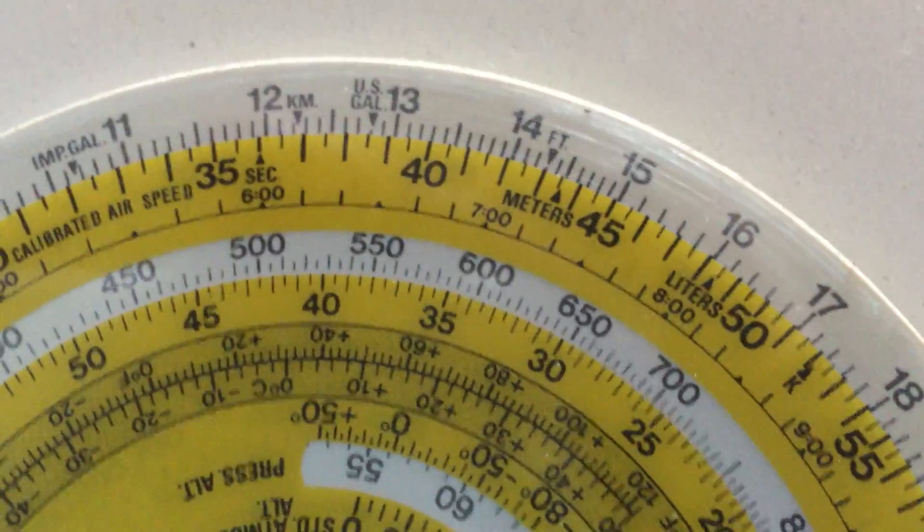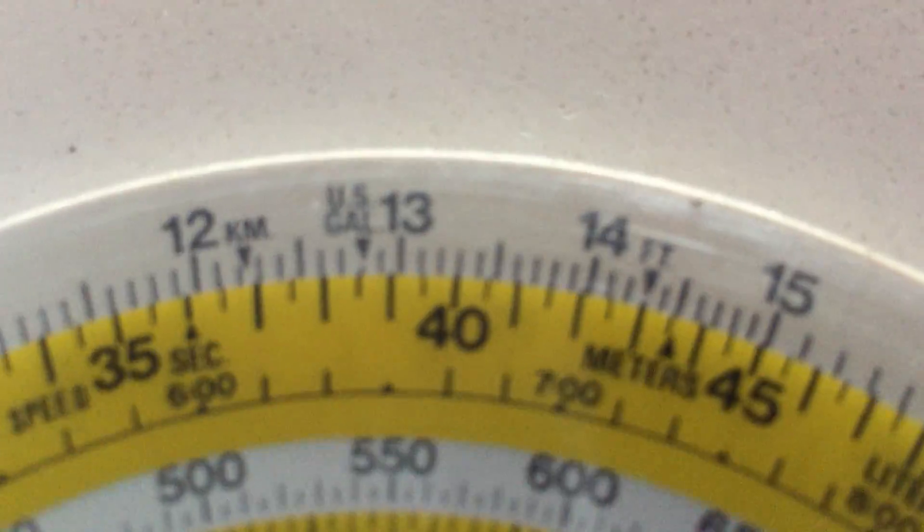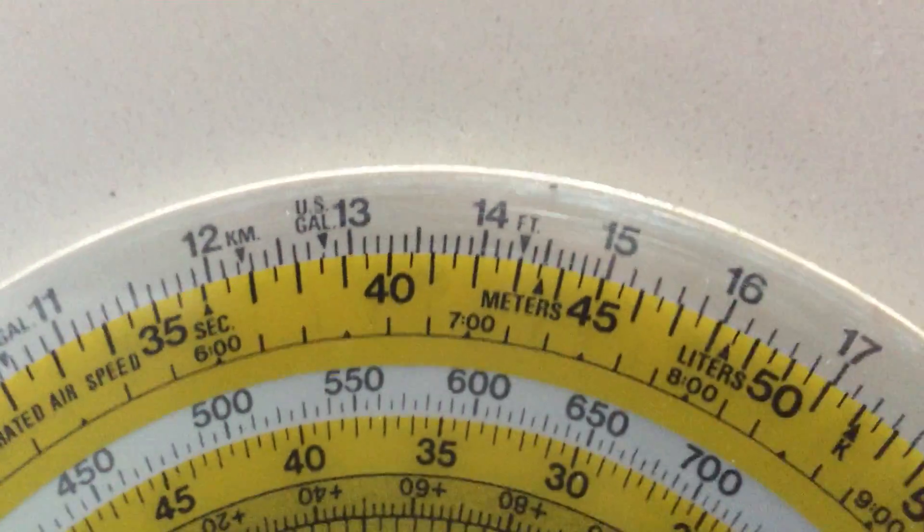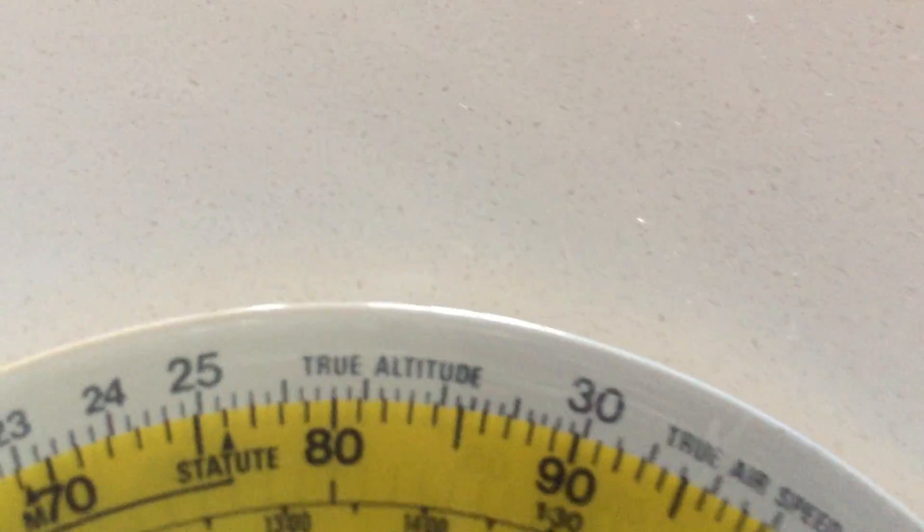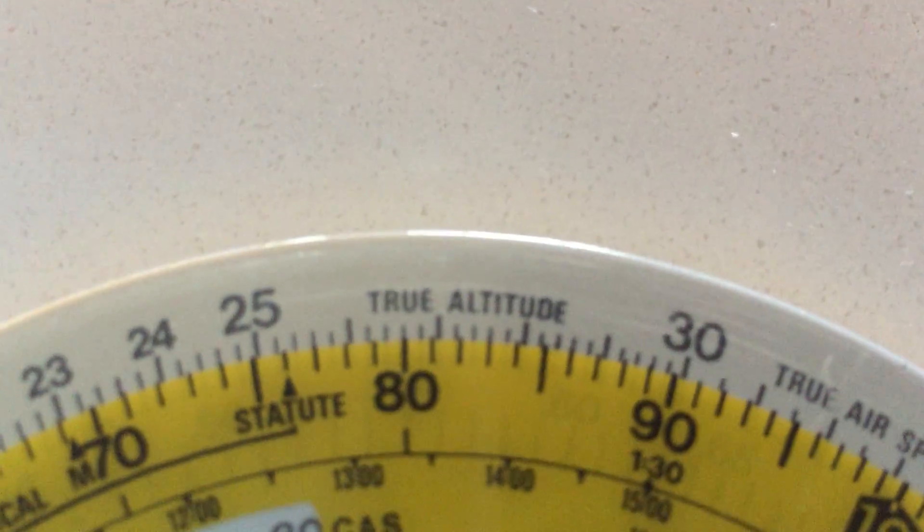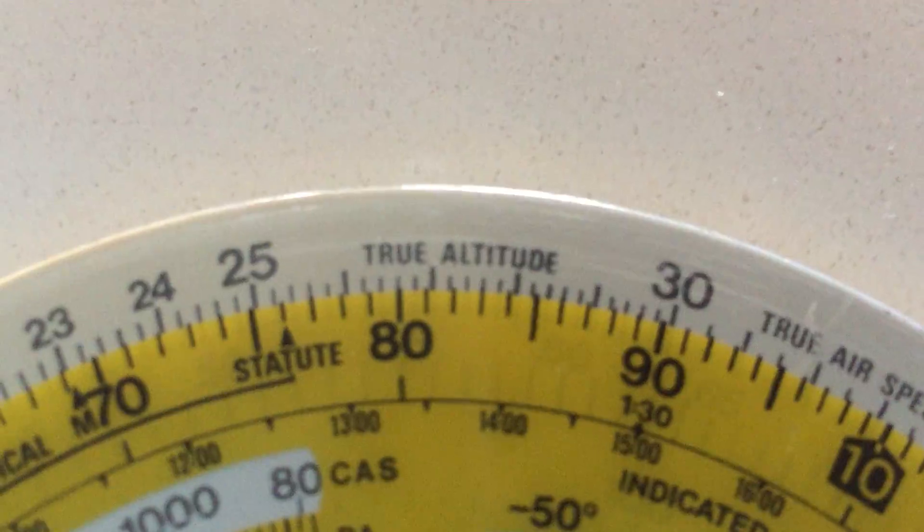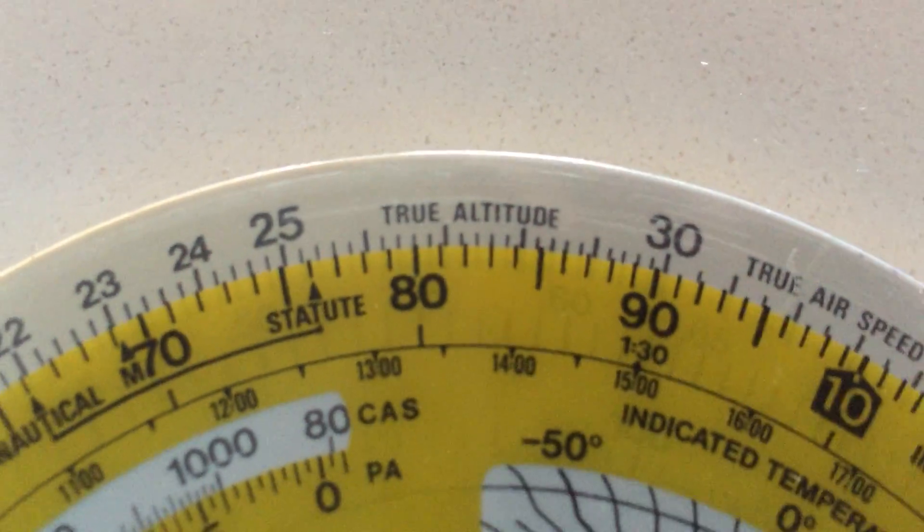But it allows us also to work out how much would we burn if the leg's 40 minutes. We'd burn around about 13 and a half. What about if total flight time was going to be, say, 80 minutes? You can see that we're going to burn roughly around about 26 and a half litres.